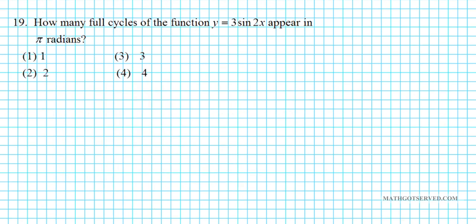All right. Let's take a look at number 19. It says, how many full cycles of the function y equals 3 sine 2x appear in pi radians? Okay? So if you think about a full cycle, one full cycle is a period. Okay? There's one period. And you remember what the complete period of the sine function looks like, right?